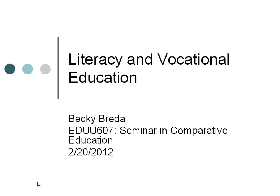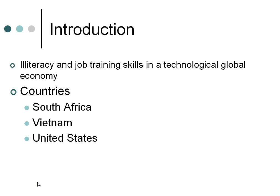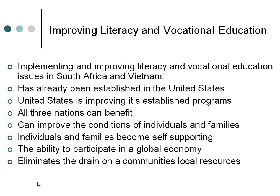Literacy and Vocational Education by Becky Breda. Illiteracy and Job Training Skills in a Technological Global Economy — covering the countries of South Africa, Vietnam, and the United States. Implementing literacy and vocational education issues in South Africa and Vietnam, which have already been established in the United States, can improve the conditions of individuals and families in all three nations along with economic status.